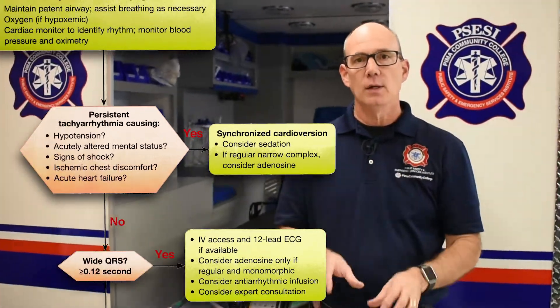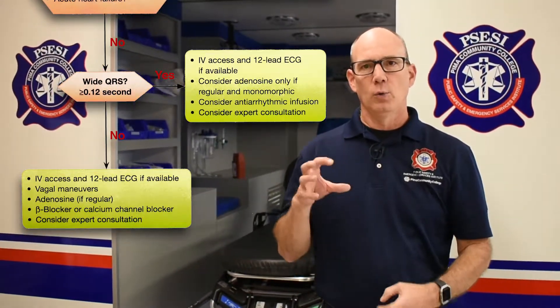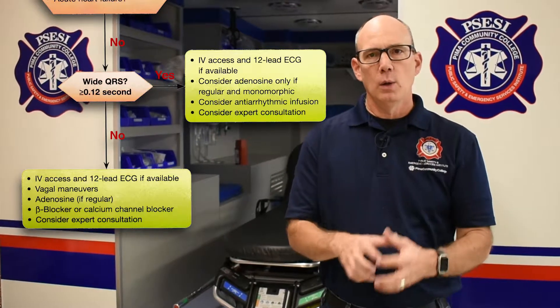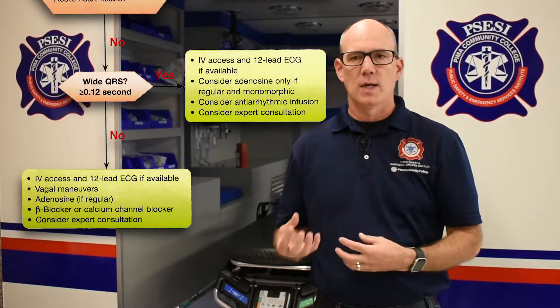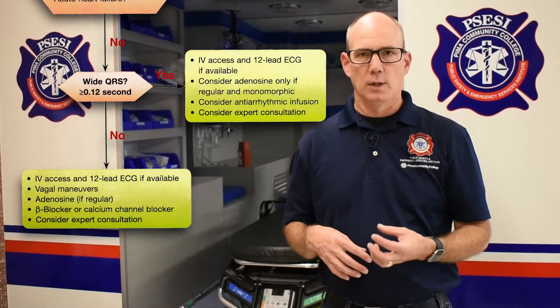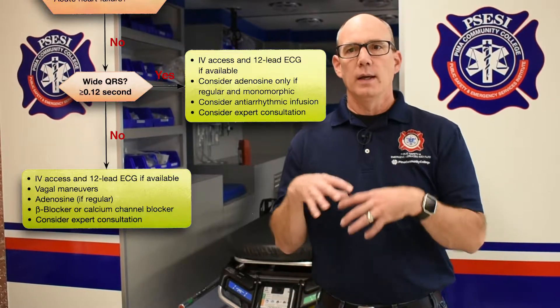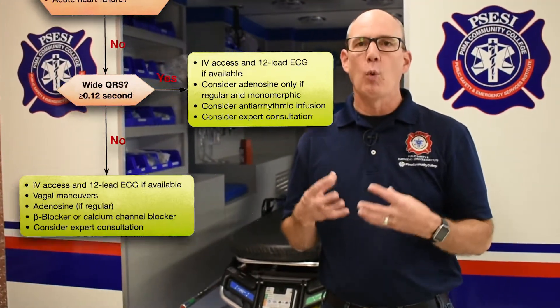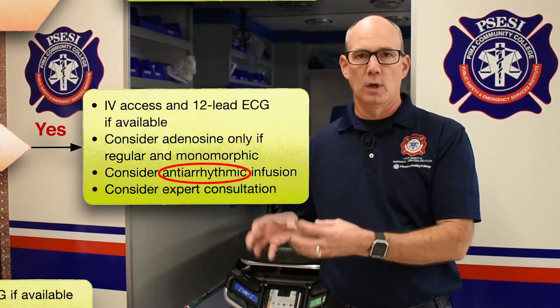If they're not unstable, we're going to go a little bit farther down — again we're at a decision-making point. Is our rhythm more narrow or is it wider? Then we can talk about different types of pharmacology, including adenosine and amiodarone. If it appears that we have a wide tachycardia, then we're going to focus on amiodarone as our drug of choice.